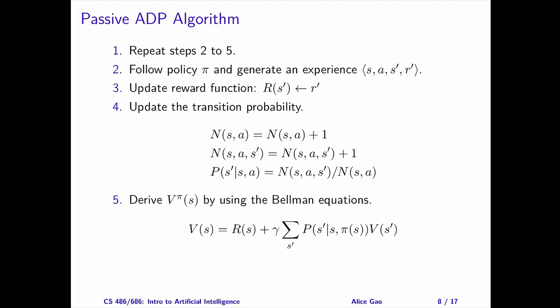Let's take a look at the passive ADP algorithm. There's a loop from step 2 to step 5. The agent will go through this loop whenever it takes an action and generates a new experience. Step 2: Generating an Experience. Suppose that the agent is in state S right now. The agent takes an action A based on the policy Pi.